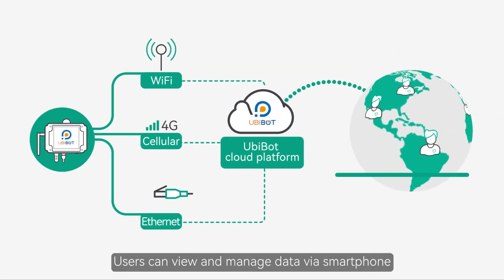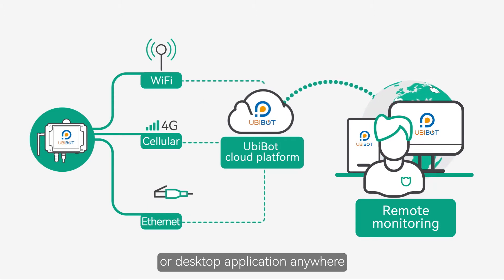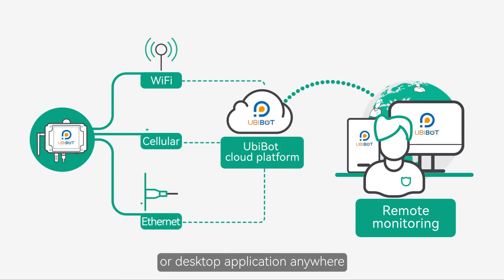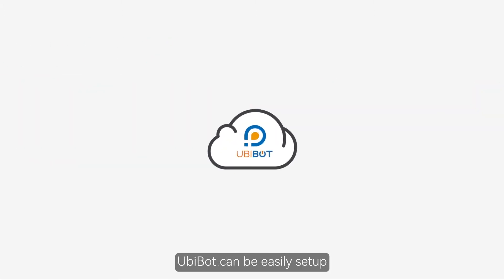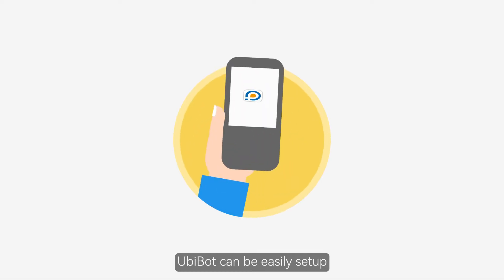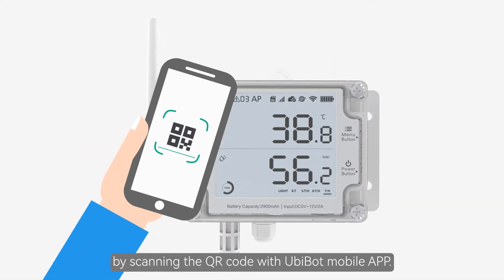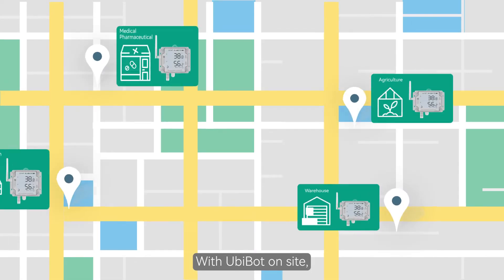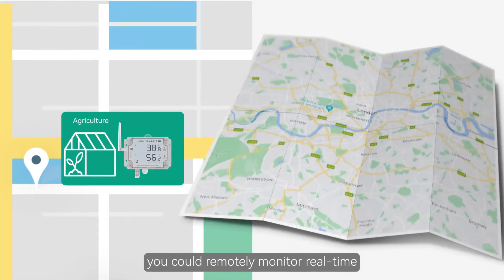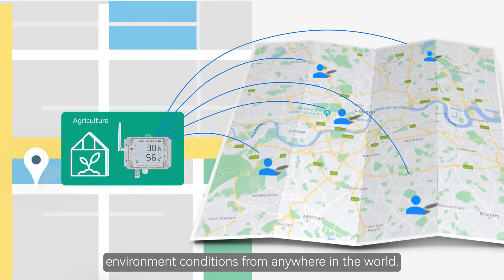Users can view and manage data via a smartphone or desktop application anywhere, anytime to achieve remote monitoring. UbiBot can be easily set up by scanning the QR code with the UbiBot mobile app. With UbiBot on-site, you can remotely monitor real-time environmental conditions from anywhere in the world.